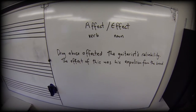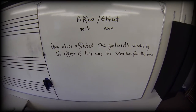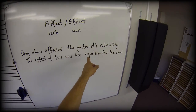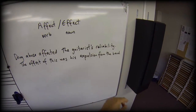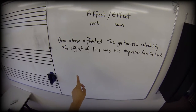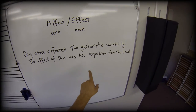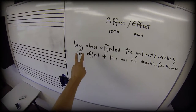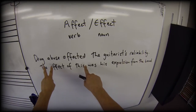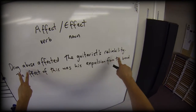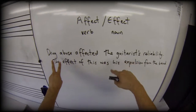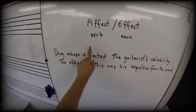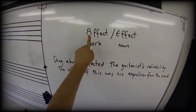So let's look at a sentence which combines these correctly. 'Drug abuse affected the guitarist's reliability.' You can see that the drug abuse is active — it is doing something to the guitarist's reliability — and so it has a verb, and that verb is 'affected' with an A.